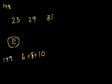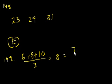6 plus 8 plus 10. But you could immediately see that the average is going to be 8, right? Because you have 8 in the middle and both of these numbers are 2 away from it. But that divided by 3 is equal to, 24 divided by 3 is equal to 8.